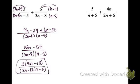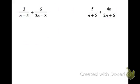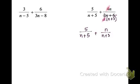This next problem works the same way. I'm going to multiply top and bottom by n plus 5, and top and bottom by 2n plus 6. But I notice I could pull a factor of 2 out of 2n plus 6 first — I'll do that to make the problem easier. Then I can simplify between 4n and 2, dividing both by 2, to get n over n plus 3. Now I'll multiply the left fraction by n plus 3 on top and bottom, and the right fraction by n plus 5 on top and bottom. My common denominator is n plus 5 times n plus 3.